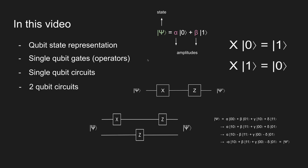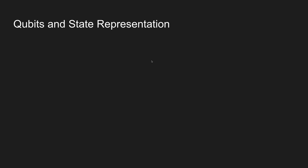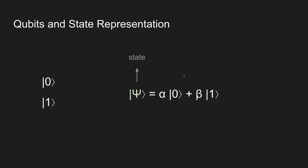Then we're going to look into two qubit circuits and how it would move on to n qubit circuits. So what are qubits and what are state representations? In the context of circuits, a qubit can have the state zero or one, and in general any quantum state is a superposition of these basis states. We call this the state psi, and these are the amplitudes of the basis states — it all comes down to probabilities of measuring a state.